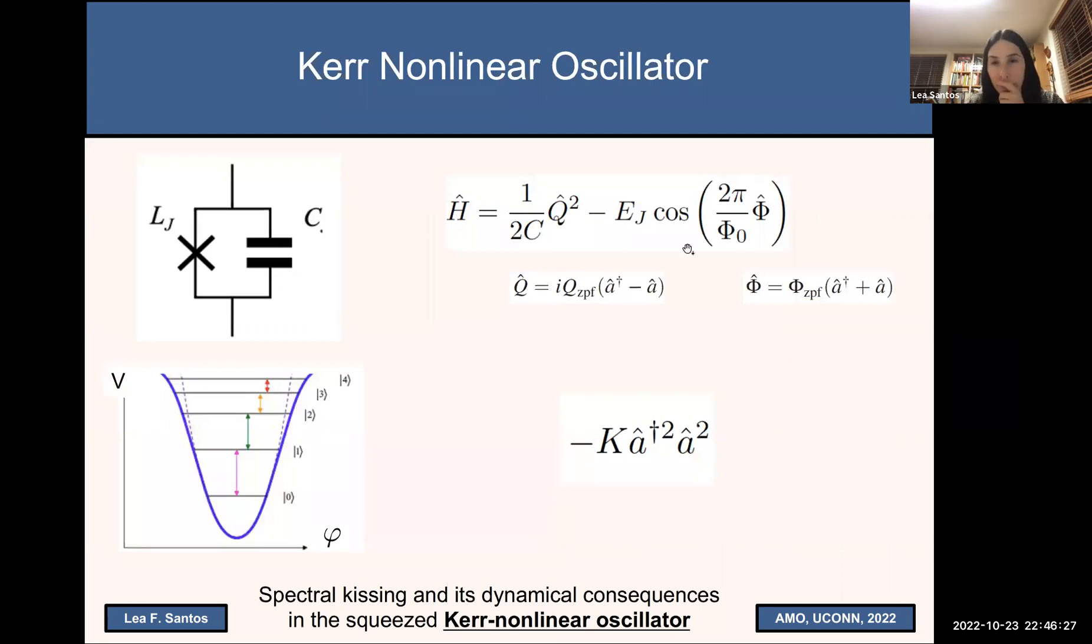So this is the Hamiltonian, as we said. We can see the charge as momentum, we can see the flux as coordinate. Well, if we now expand this cosine, the first term, the first correction that will appear, the first correction to the harmonic oscillator, is this term here. This is the same term that we see, that we find in nonlinear optics when we have a very strong, a very intense light. When we have a very intense light, we give rise to this effect which is known as Kerr effect. So because this is the first term that appears here, we will be calling our nonlinear oscillator Kerr nonlinear oscillator.